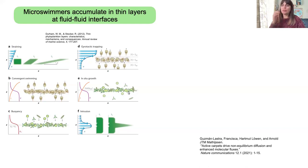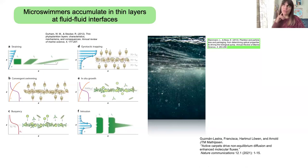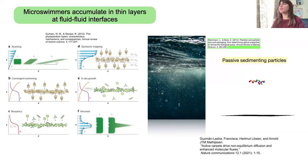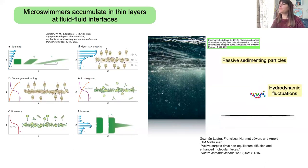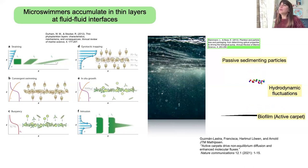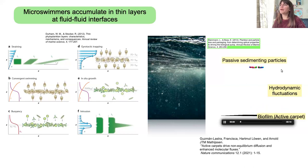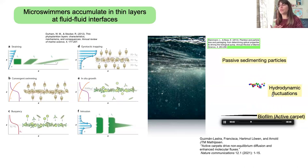With my collaborators, we know that when we consider a very thin biofilm formation of microswimmers, they affect the water column. In previous work, we considered passive sedimenting particles in colors, allowing them to sediment towards an active carpet made of pusher-like microswimmers. Due to the hydrodynamic fluctuations the active carpet exerts on the flow, you can see the passive particles start to steer — they mix. All this agitation is only due to the biogenic transport exerted by the active carpet.